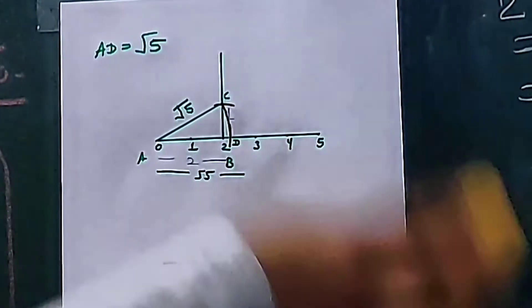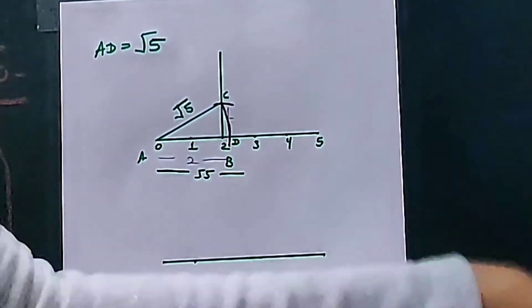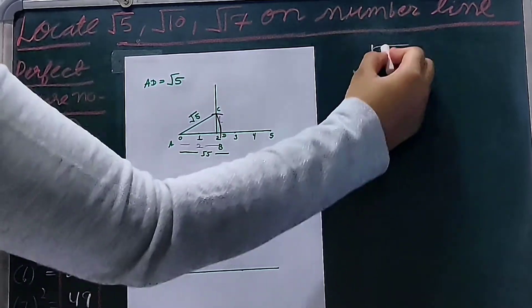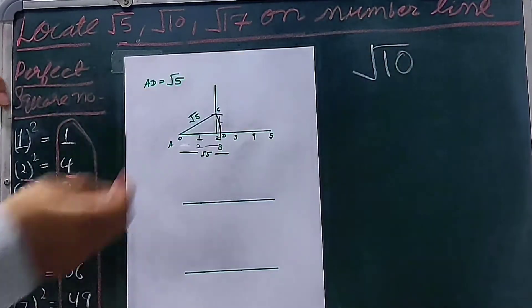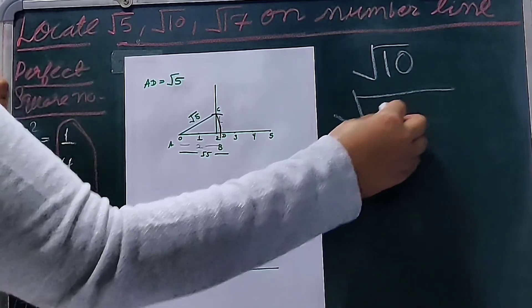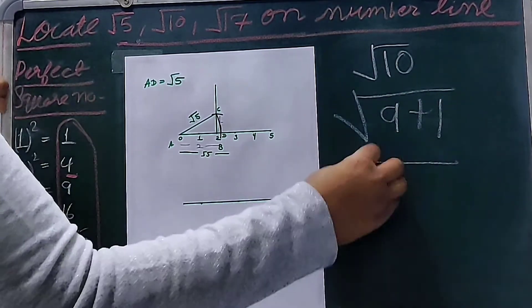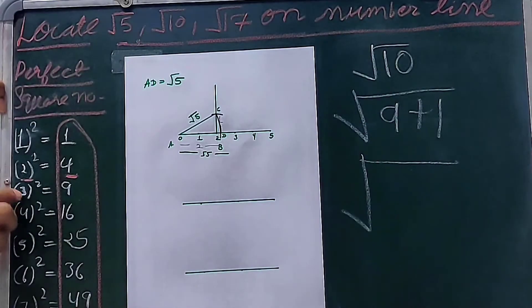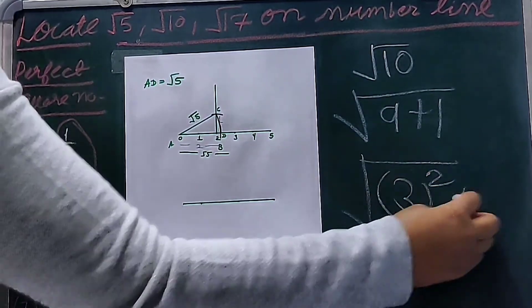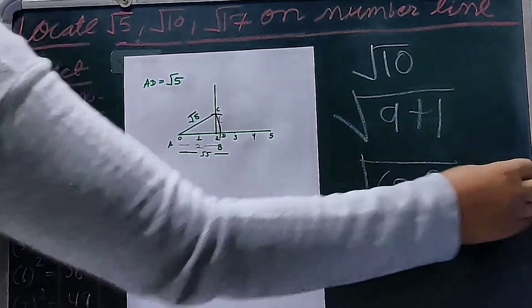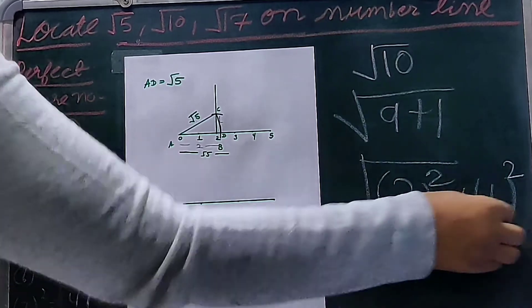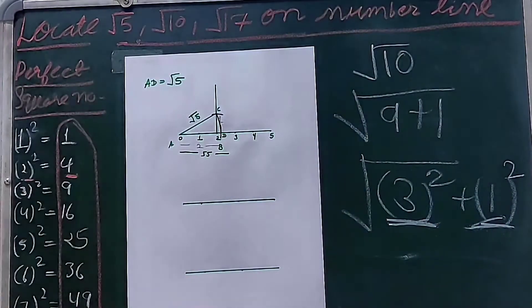Now we will locate root 10 on the number line using a similar procedure. Root 10 is nearer to 9, so we can write root 10 as 9 plus 1. Because 9 is the square of 3, we can write it like 3 squared plus 1 squared. Now we have two numbers, 3 and 1, for root 10.